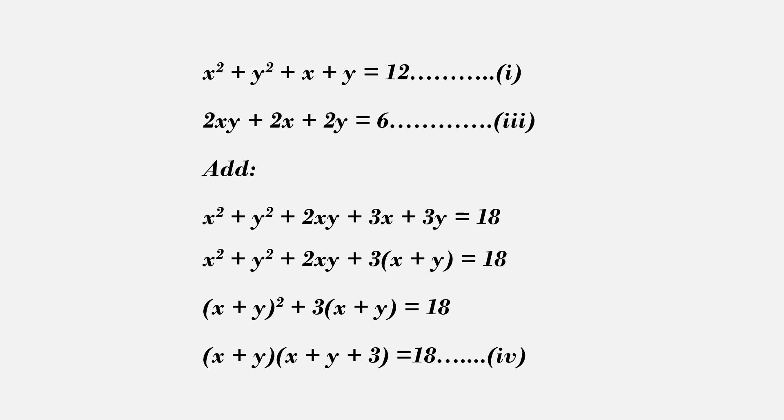Add equations 1 and 3, we get x squared plus y squared plus 2xy plus 3x plus 3y equals 18. x squared plus y squared plus 2xy will give x plus y whole square. So, x plus y whole square plus thrice x plus y equal to 18.